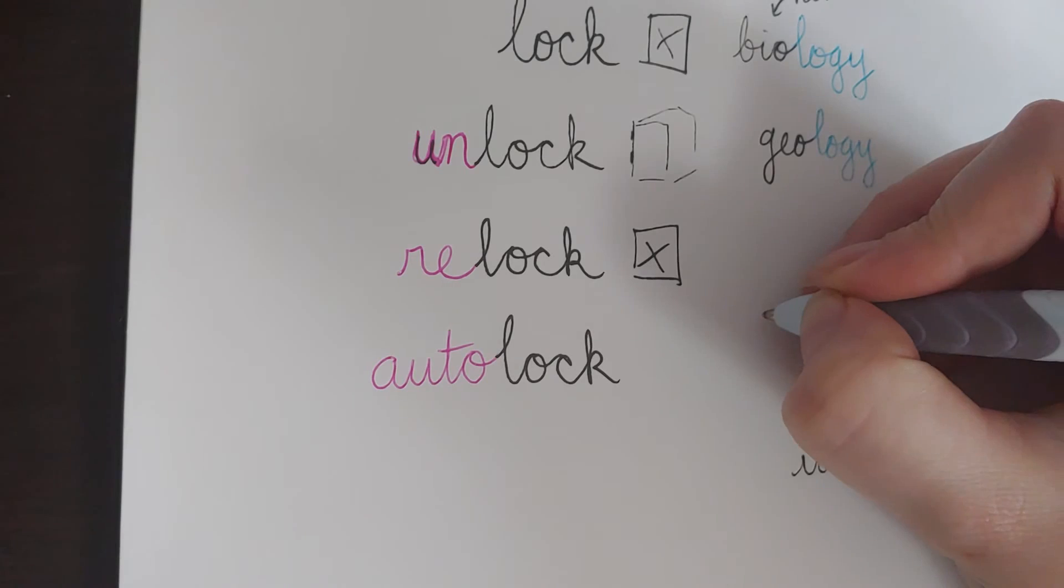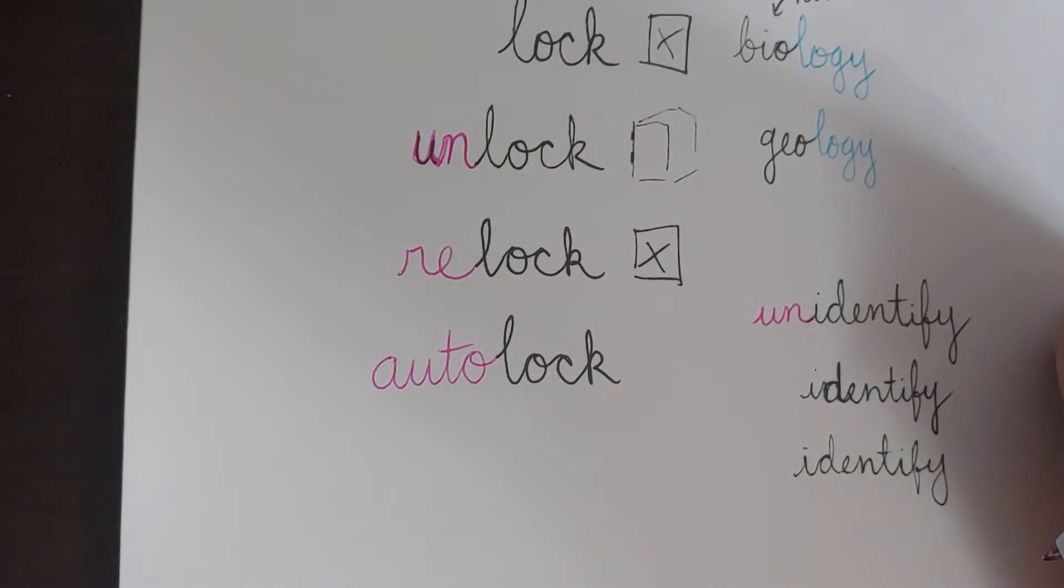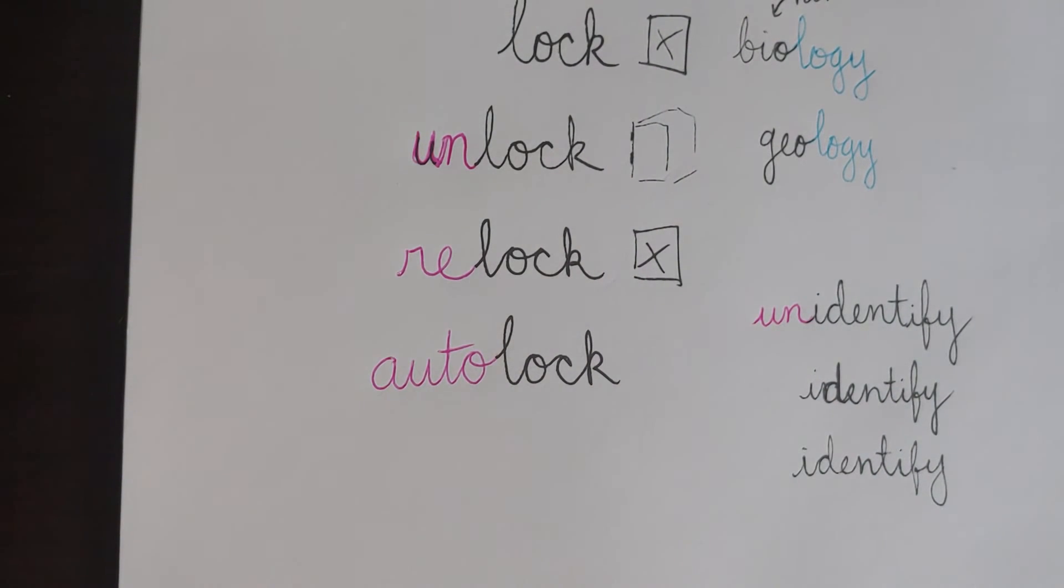What if something is unidentified? Un means not. So an unidentified thing would be something that you cannot figure out what it is. All right, let's think of some others.